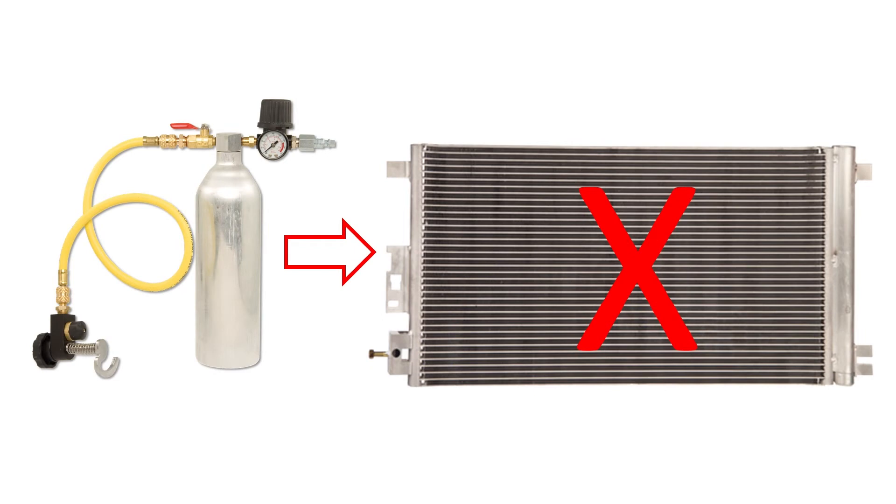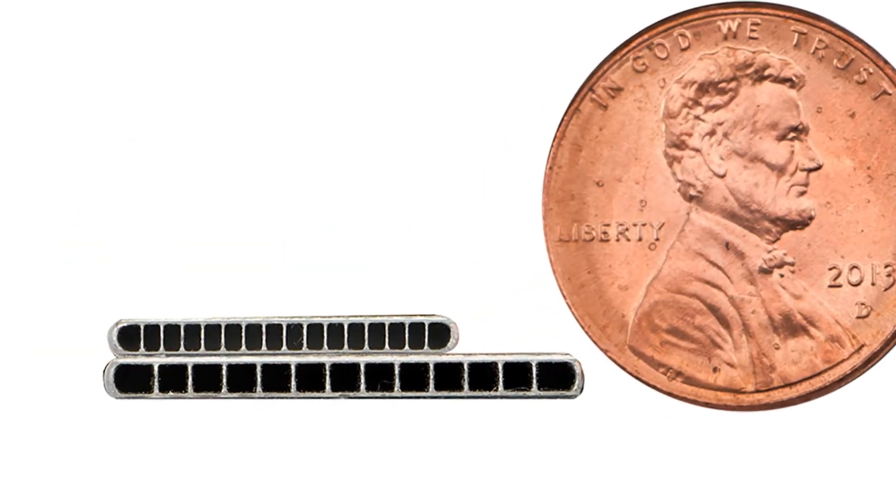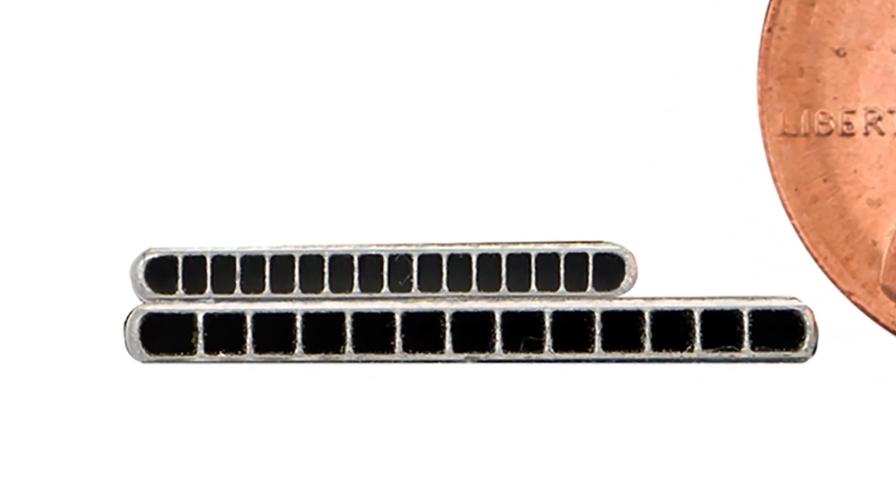Most flat tube, multi-pass, multi-path flow condensers cannot be flushed. They should be replaced. The internal passages are extremely small, just a few thousandths of an inch in diameter.